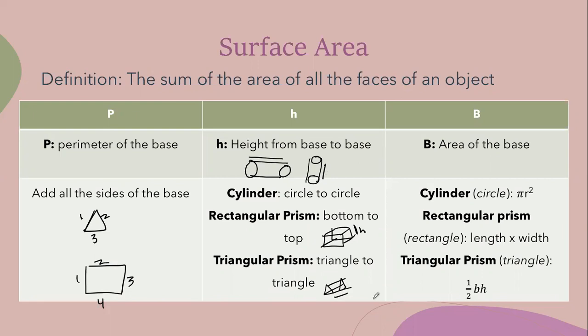What does capital B stand for? Area of the base. If my base is a circle I use pi r squared. If my base is a rectangle I use length times width. If my base is a triangle I use one half base times height. Look at your formula chart where it says area. All of those formulas are right there for whatever shape your base is.